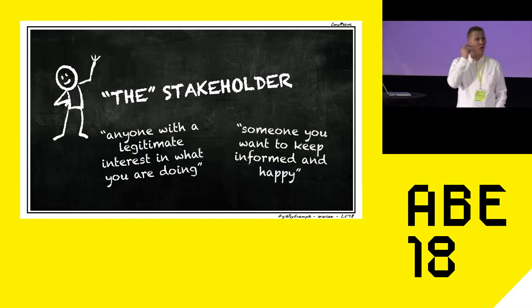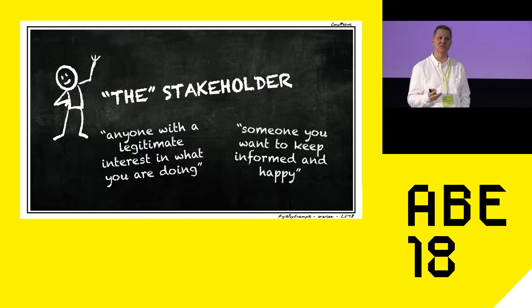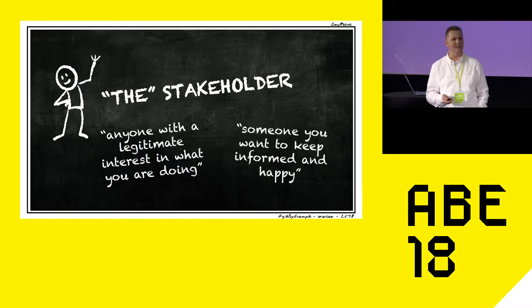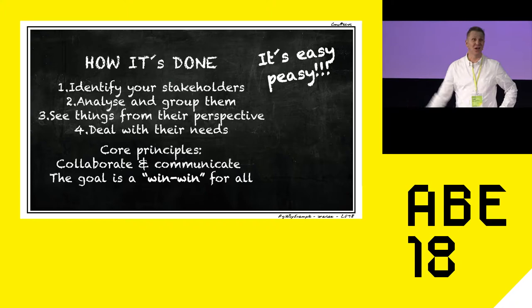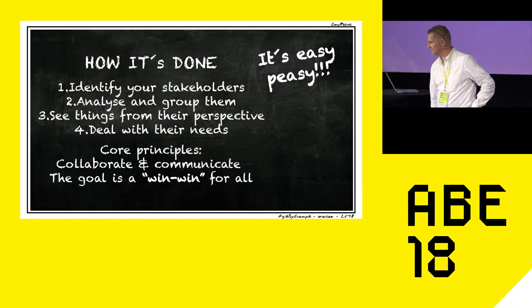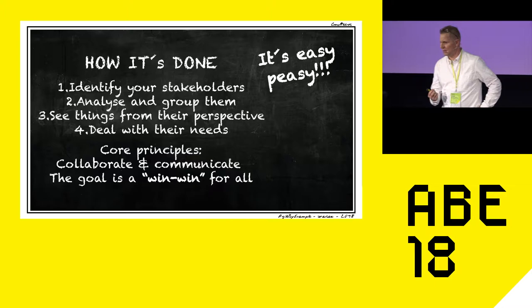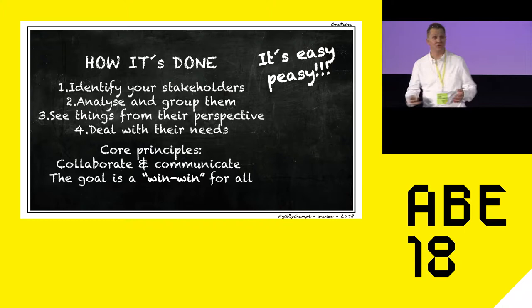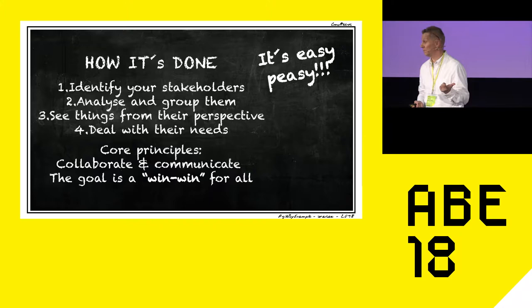First I'll give you the year 101 on stakeholders — the two-slide crash course, everything you need to know. A stakeholder is anyone with a legitimate interest in what you're doing, and that can pretty much be anybody. The second thing is that a stakeholder is someone you really want to please and keep informed. The recipe for success: identify your stakeholders, analyze and group them, try to see things from their perspective, read their needs, and then start trying to do something about them. The core principles — communicate and collaborate all the time — and the goal is of course a win-win for everybody.